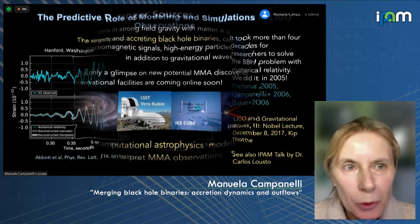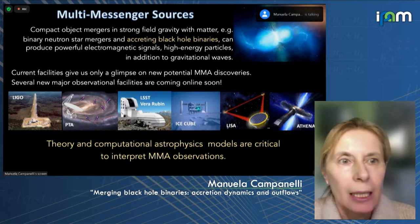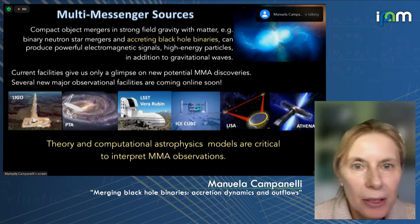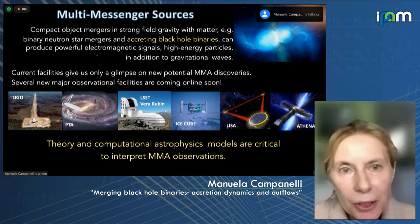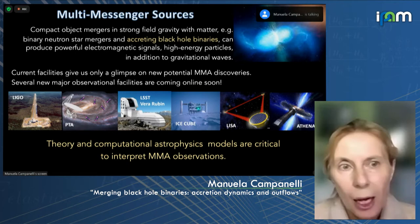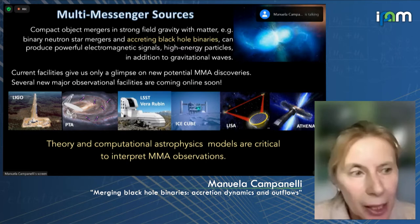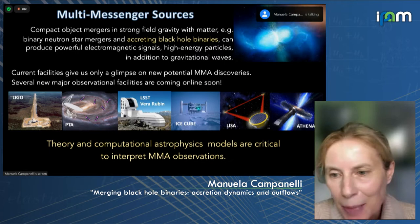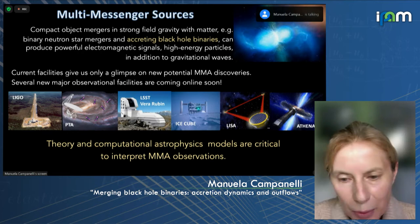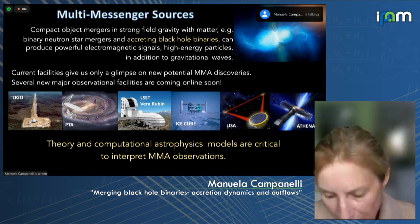As far as multi-messenger astronomy, in order to get the other types of signals, we know that we need matter, magnetic fields, and highly relativistic particle emission as well. For these cases, we are generally talking about binary neutron star mergers, but also accreting binary black holes, because these can produce powerful electromagnetic signals as well as jets, in addition to gravitational waves. With a lot of new observational facilities coming online soon, this makes it even more exciting from the theory and computational astrophysics point of view, because we want our models to be critical to interpreting these observations.